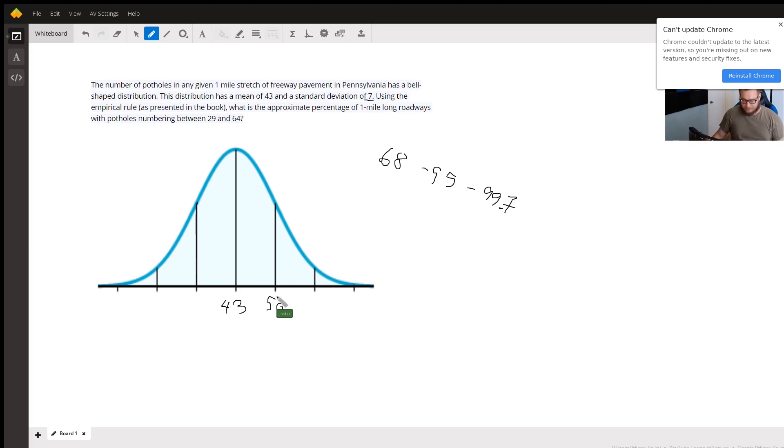if we go 7 above the mean and 36 if we go 7 below the mean. What this means, according to the empirical rule, is that 68% of all of these one mile stretches of roads will contain between 36 and 50 potholes.